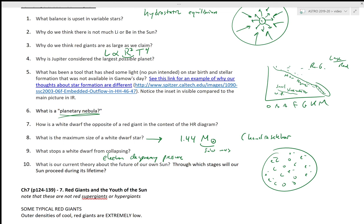Our current theory about the future of our own Sun: through which stages will our Sun proceed during its lifetime? I will have a separate video for that at the end of the series. You can look at the sequence in the Cosmos textbook and the link I mentioned in the previous video.